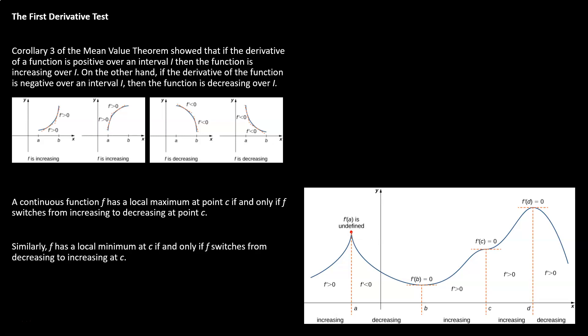Maxima and minima occur at the points where the derivative switches from positive to negative. At the x-value A we have a critical point that qualifies as a maximum because our derivative goes from positive to negative right at that critical point — an increasing function reaches a corner and then switches to decreasing. The function continues to decrease until we reach the next critical point at B, which is a minimum because the derivative goes from negative to positive at x equals B.